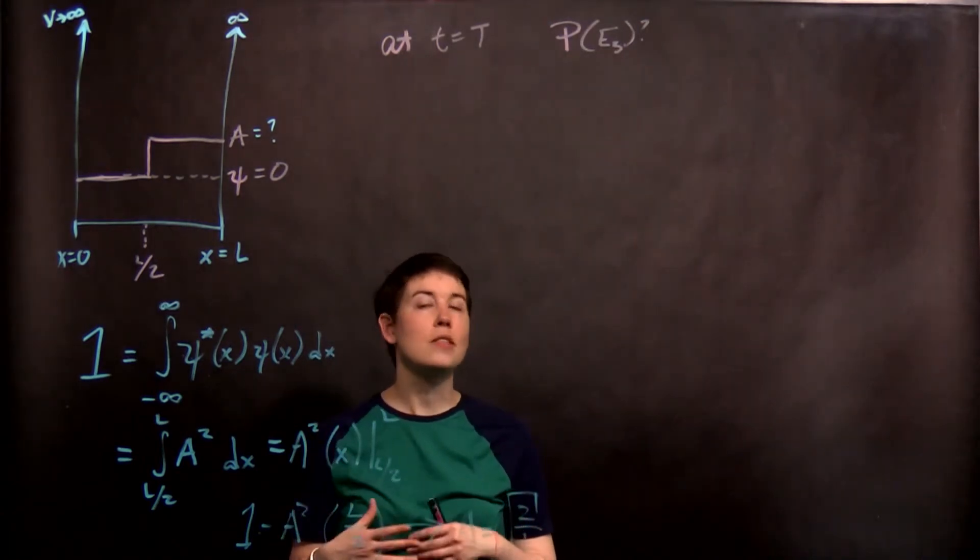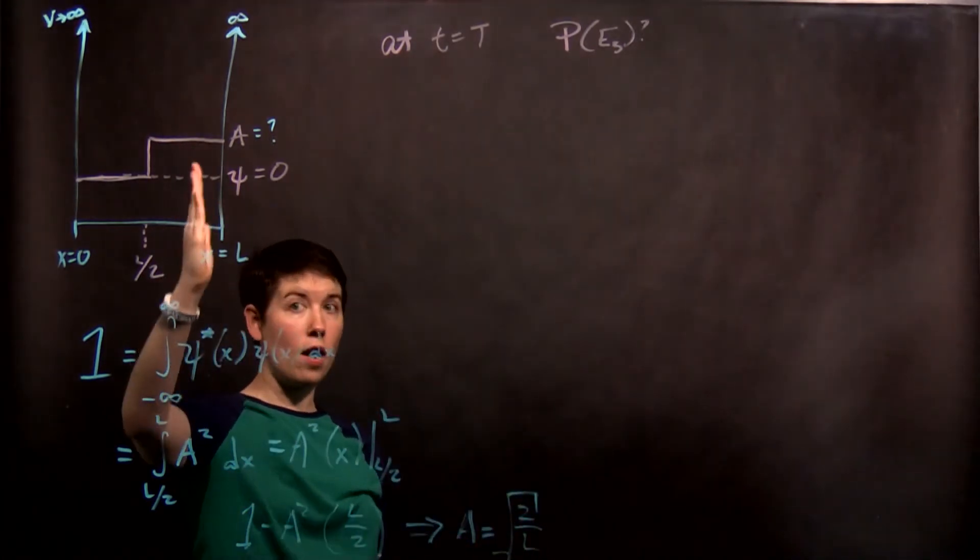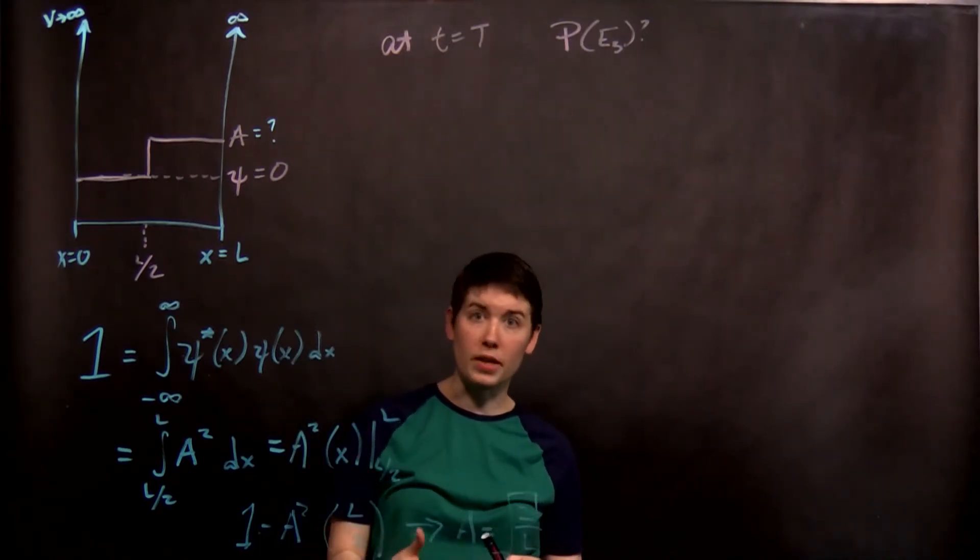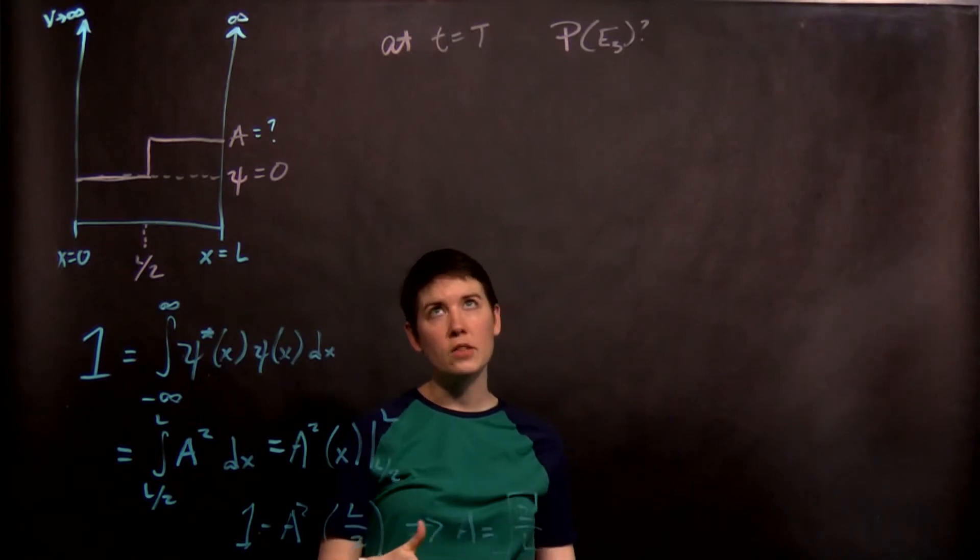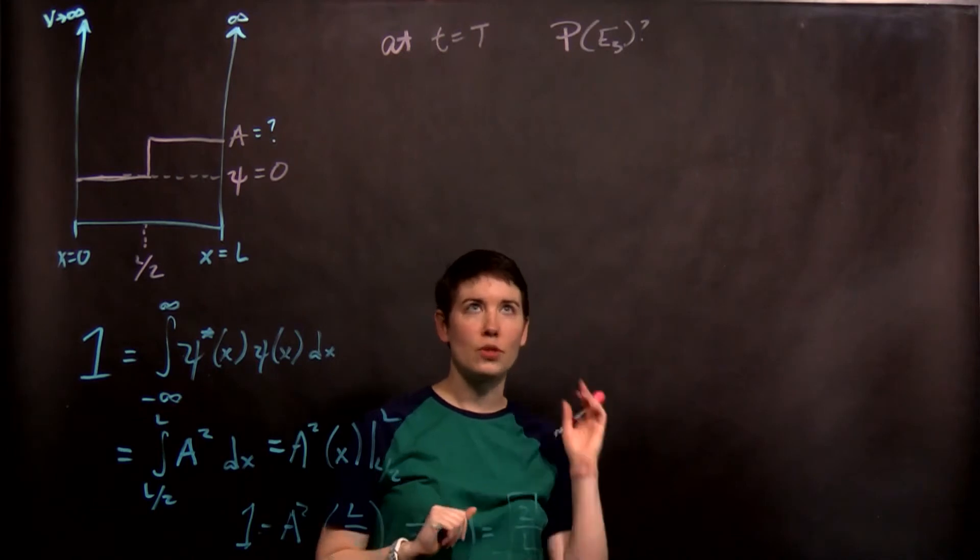If I said what is the expectation value of position right now, it would be three quarters up. That's our average position. But I could say at a later time, what's the expectation value of position? That you would really need to introduce time dependence. If it's just the probability of measuring a certain energy, good news, that doesn't change with time.